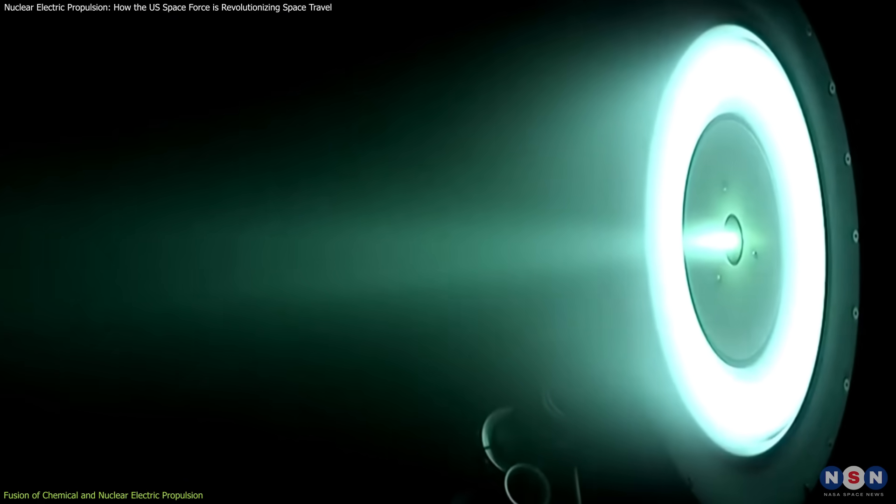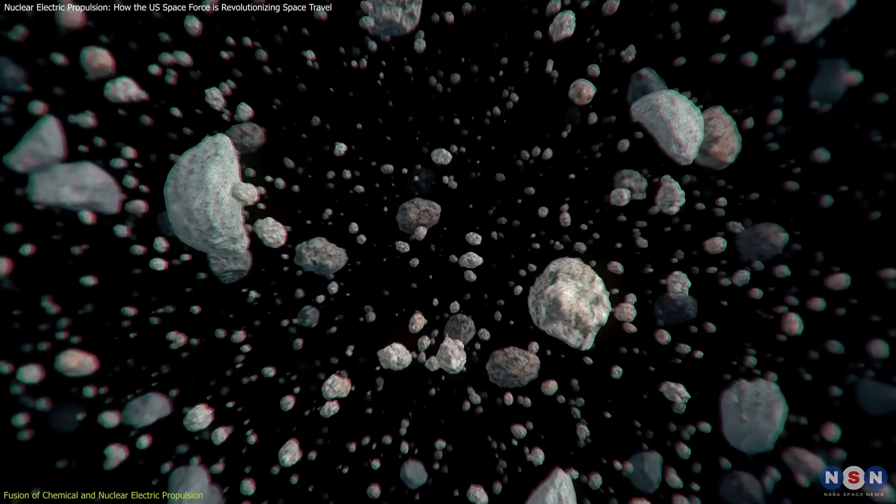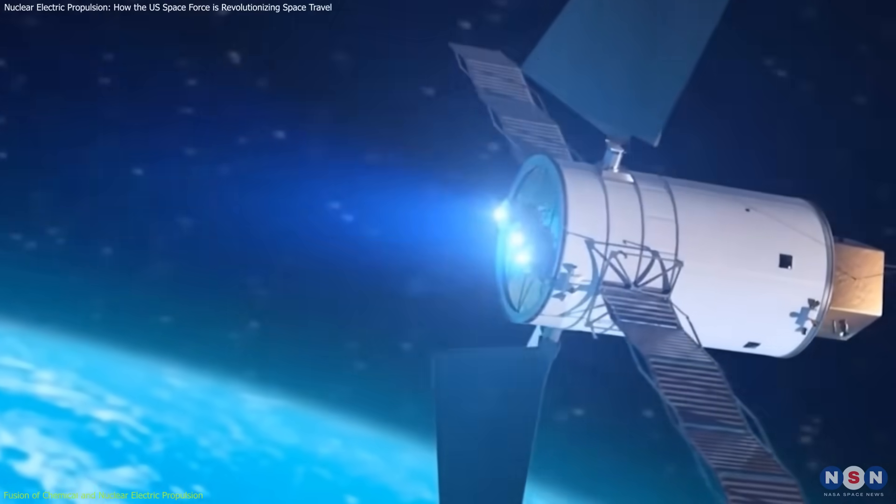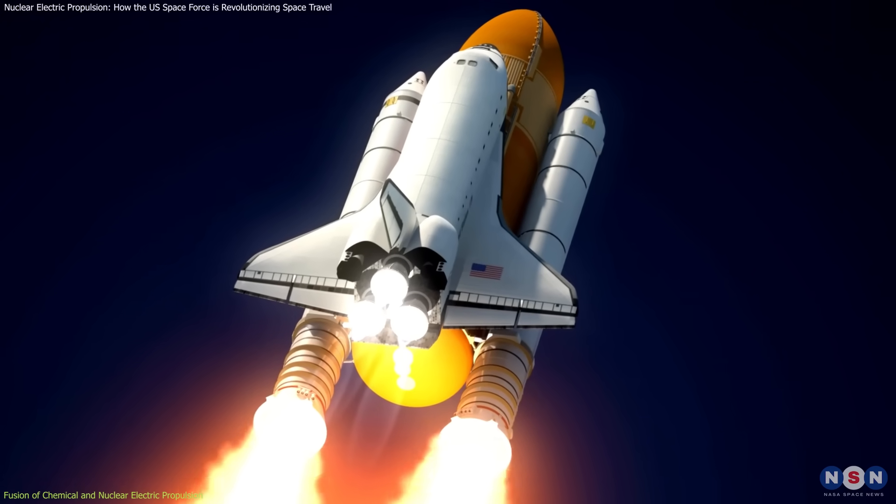It allows the spacecraft to shift between high thrust and fuel efficient modes. During critical moments, like avoiding space debris or adjusting its trajectory in tight windows, the spacecraft can rely on chemical rockets for rapid acceleration.